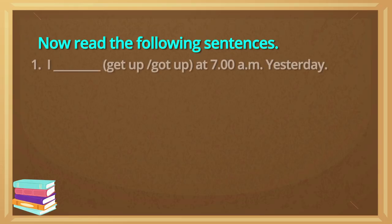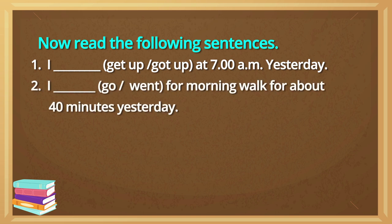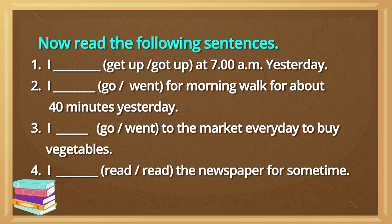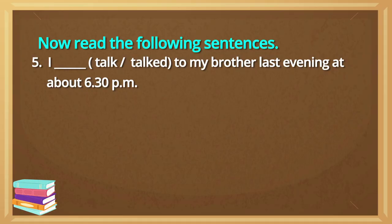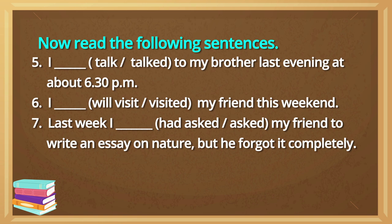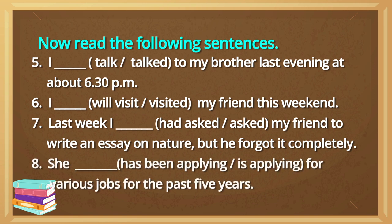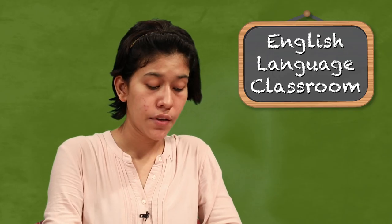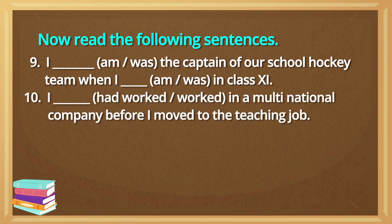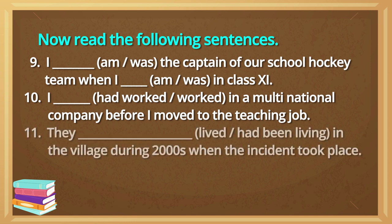The first sentence: 'I get up / got up at 7am yesterday.' 'I go / went for morning walk for about 40 minutes yesterday.' 'I go / went to the market every day to buy vegetables.' 'I read / read the newspaper for some time.' 'I talked / talked to my brother last evening at about 6:30pm.' 'I will visit / I visited my friend this weekend.' 'Last week I had asked / asked my friend to write an essay on nature, but he forgot it completely.' 'She has been applying / is applying for various jobs for the past five years.' 'I am / I was the captain of our school hockey team when I am / I was in class ninth.' 'I had worked in a multinational company before I moved to the teaching job.' 'They lived / they had been living in the village during the 2000s when the incident took place.' 'They shall have completed / they will complete the work by the time you reach the place.'